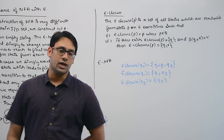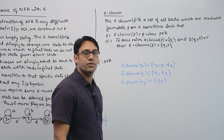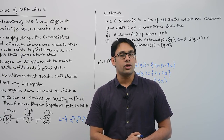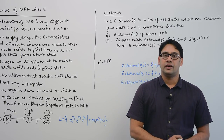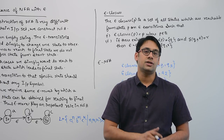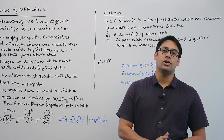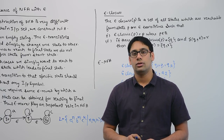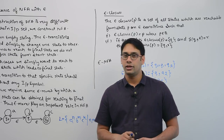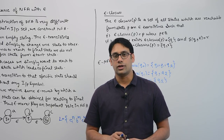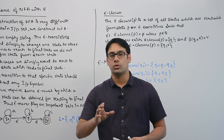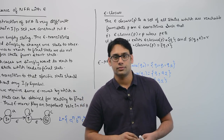So now you know what an epsilon-NFA is. I have shown you a simple diagram of an epsilon-NFA. In the coming videos we are going to see how to convert an epsilon-NFA to an NFA. You already know how to convert an NFA to a DFA, and keep in mind that converting an NFA to a DFA does not guarantee a minimized DFA — we may get a DFA which is not minimized. We can then minimize that DFA to make a minimal DFA for any particular language, which we will see in later videos.